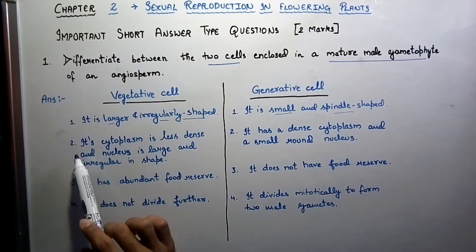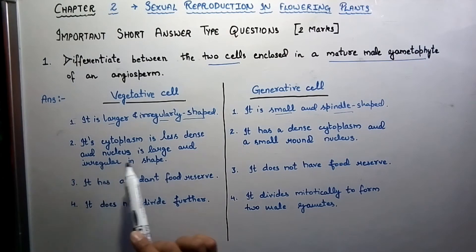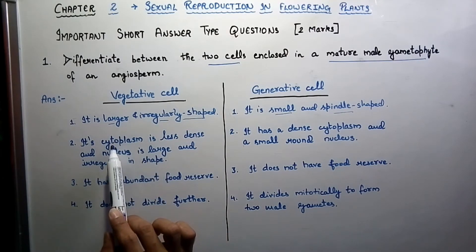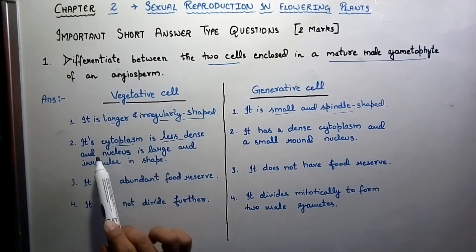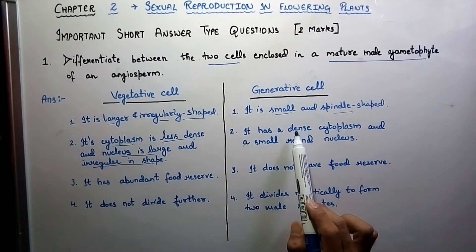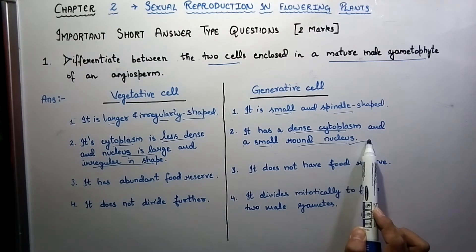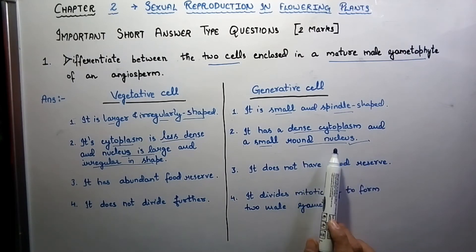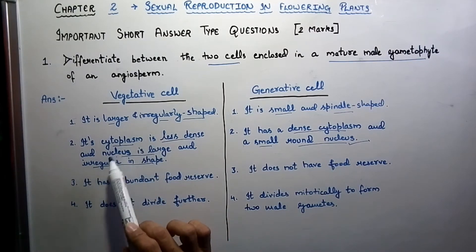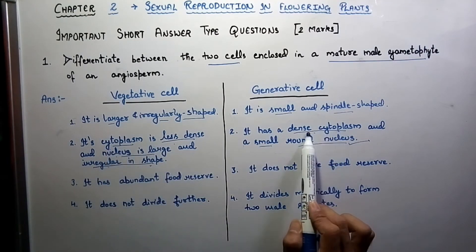The second differentiation: the vegetative cell's cytoplasm is less dense and the nucleus is large and irregular in shape. Whereas the generative cell has dense cytoplasm and a small round nucleus. Here the shape of the nucleus is confirmed and it is round in shape.